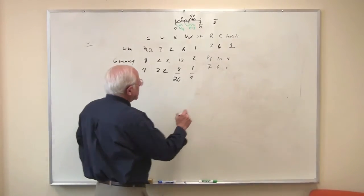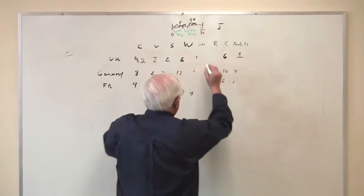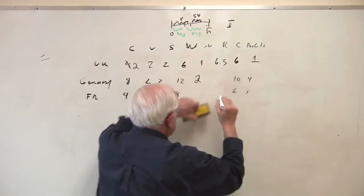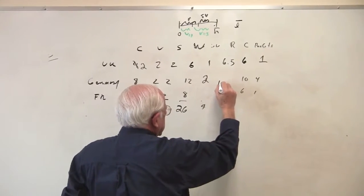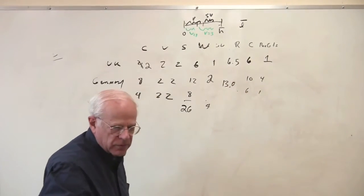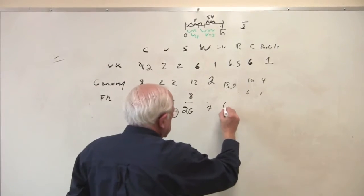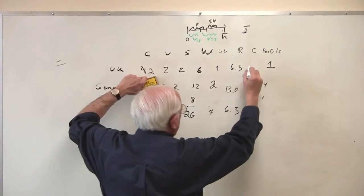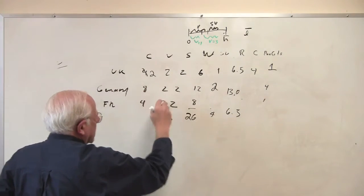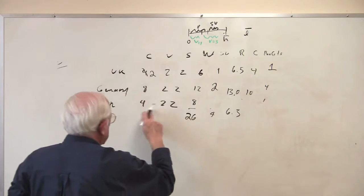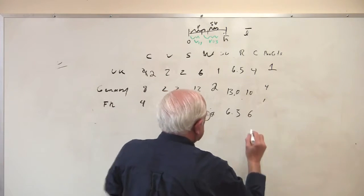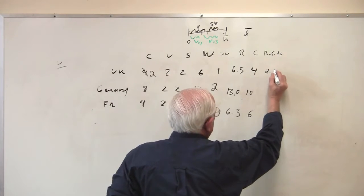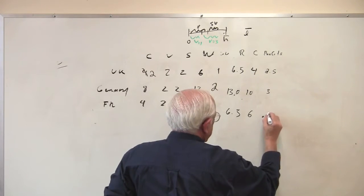Okay? And so the revenues now become 6.5, 6, sorry, 13, because there's two shirts by the Germans, 6.5. And the costs then become 4, because they've been able to cut their C, 10, 6, and hence the new profits would be 2.5, 3, and .5.